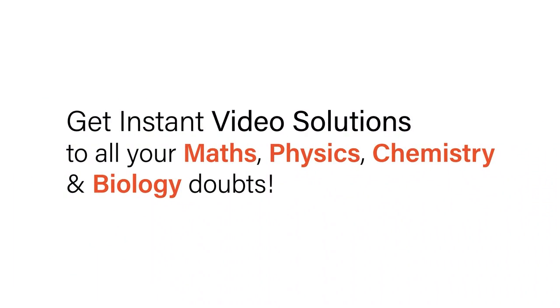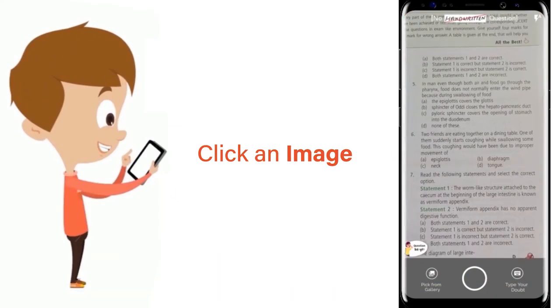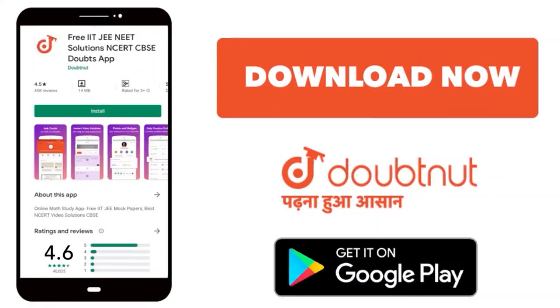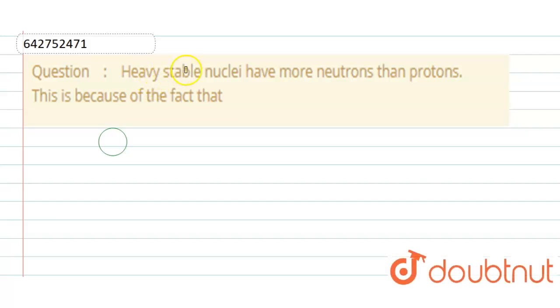With Doubtnut, get instant video solutions to all your maths, physics, chemistry, and biology doubts. Just click the image of the question, crop the question, and get instant video solution. The problem is: heavy stable nuclei have more neutrons than protons. This is because of the fact that...